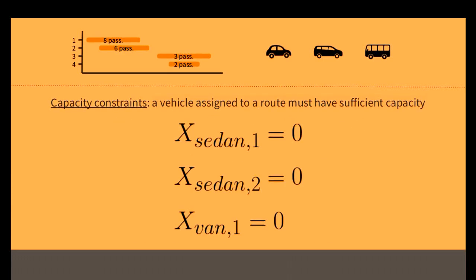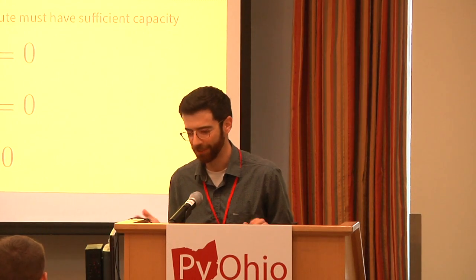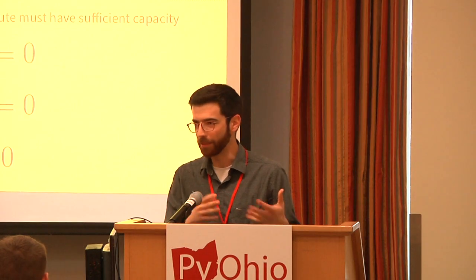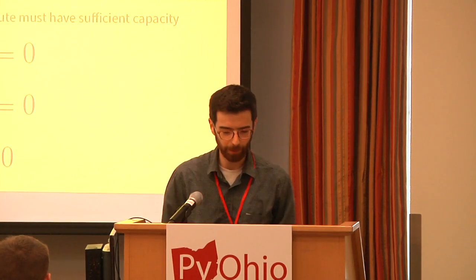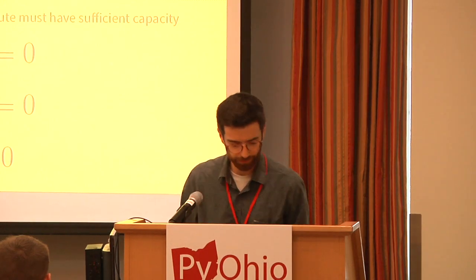Capacity constraints: a vehicle assigned to a route must have sufficient capacity. This means identifying which combinations of vehicles and routes are forbidden and forcing those variables to be 0. The sedan, for example, can't serve routes 1 or 2 — it's too small — so those variables must be 0 in every assignment. Similarly, the van cannot serve route 1, so it gets one of these constraints as well. You'll notice I've been speaking in terms of equalities, but I'm using inequalities here. You can create an equality with two linear inequalities — if you want something to equal something else, say it must be less than or equal to that thing and also greater than or equal to that thing. Under the hood, you can give an ILP solver equalities and it'll turn them into two inequalities.